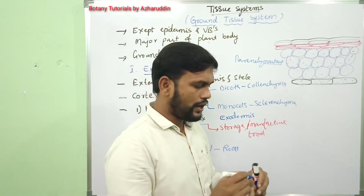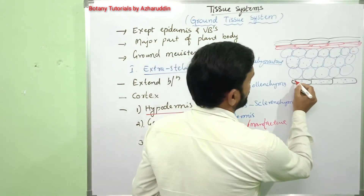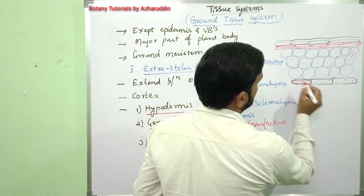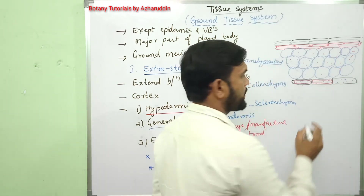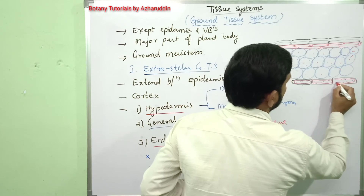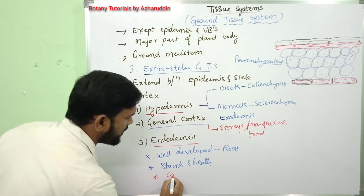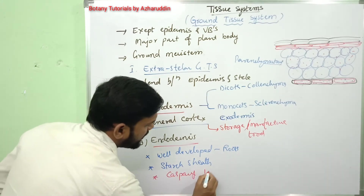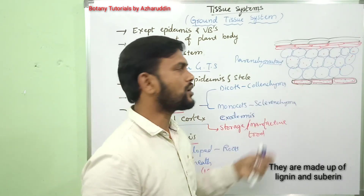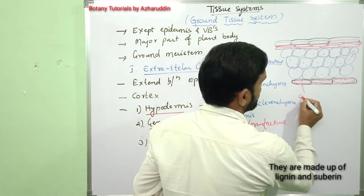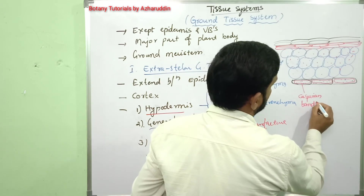Endodermal cells are wrapped with a band on the radial walls and the transverse walls — a ripple-like band. This ripple-like band was first observed by Caspari in the year 1865. So these bands are also called Casparian thickenings or Casparian bands.